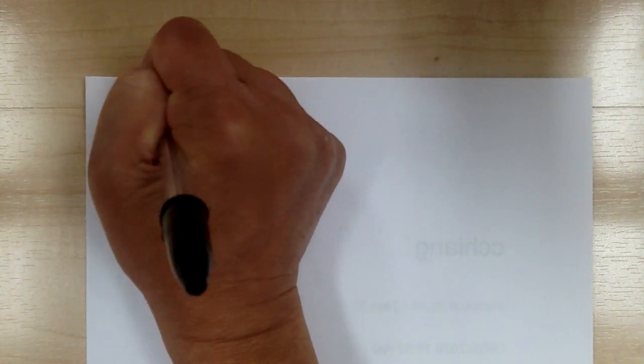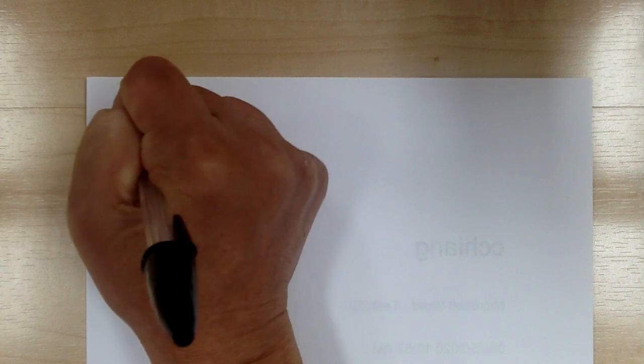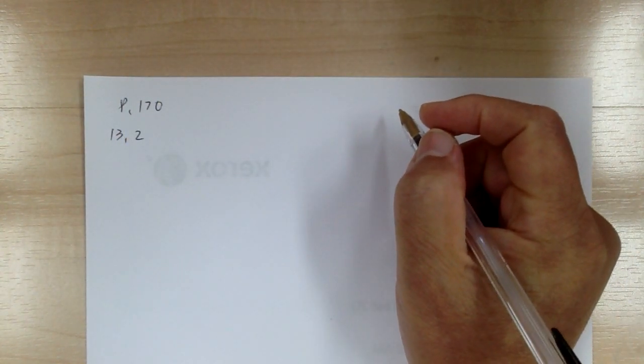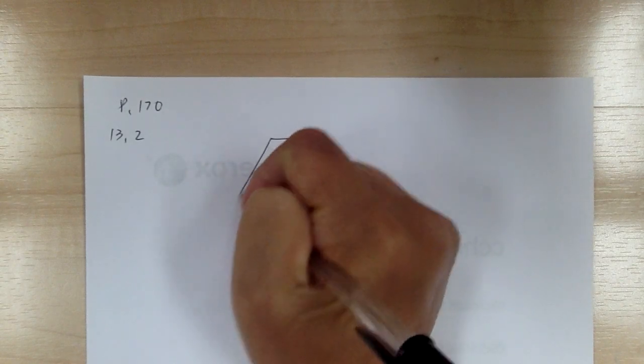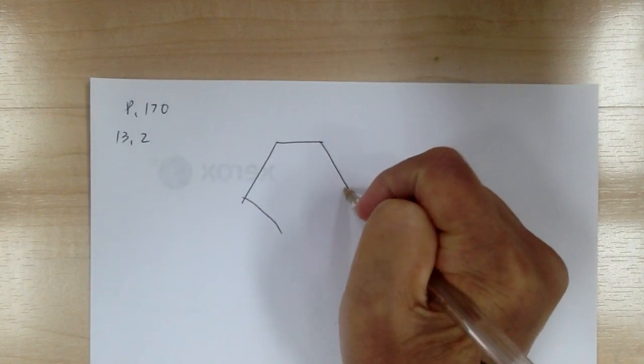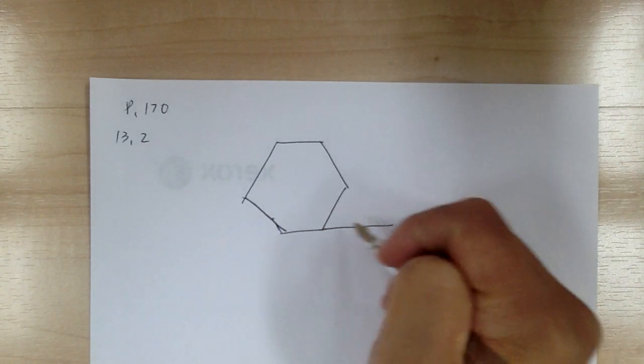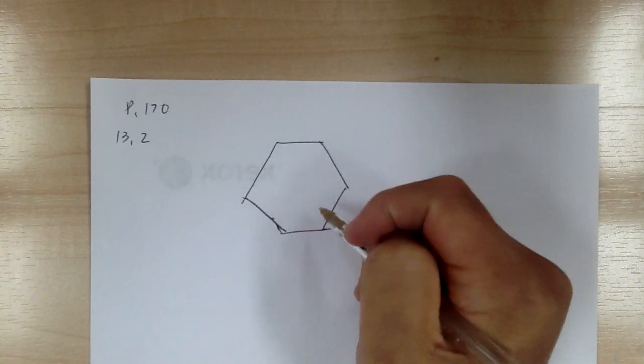Let's go to page 170, section 13.2. This section is about angles in a polygon. When you have a polygon, we're going to look at exterior angles. This applies to any polygon.